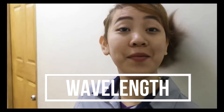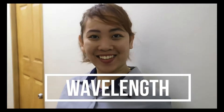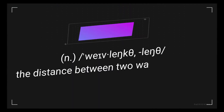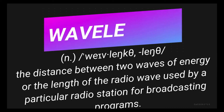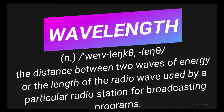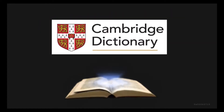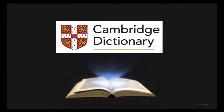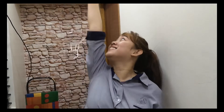So, what is a wavelength? A wavelength is the distance between two waves of energy, or the length of the radio waves used by a particular radio station for broadcasting programs — that is according to Cambridge Dictionary. So, in computing the wavelength of something, we have to make use of the light.